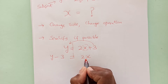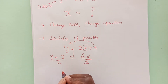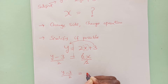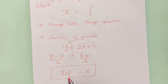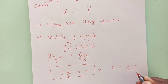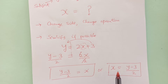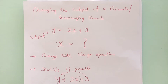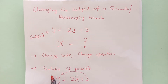So it will be y minus 3, equal sign remains as it is, then you have 2x here. We need only x on this side, so divide by 2 on both sides. This 2 is gone, so then you have y minus 3 over 2 equals to x. Now we have made x the subject. So x is equal to y minus 3 over 2. This is how we can change the subject from y to x.